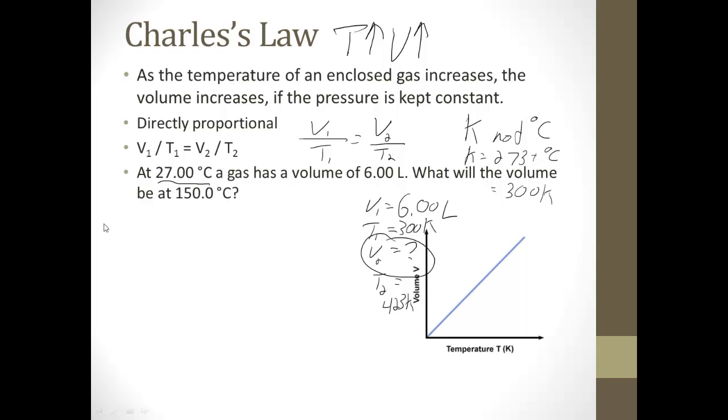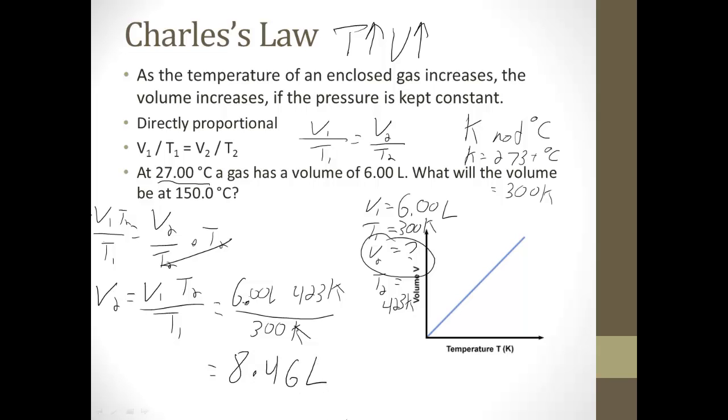So we're solving for V2. V1 over T1 is equal to V2 over T2. Well, if we multiply both sides times T2, it cancels. We end up with V2 equals V1 T2 over T1. Now we can plug stuff in. V1, 6 liters. T2, 423 Kelvins. T1, 300 Kelvins. Our Kelvins cancel, and we end up with just liters, which is volume that we want. We plug that into our handy-dandy calculator: 6 times 423 divided by 300, and we get 8.46 liters. Nice and easy.